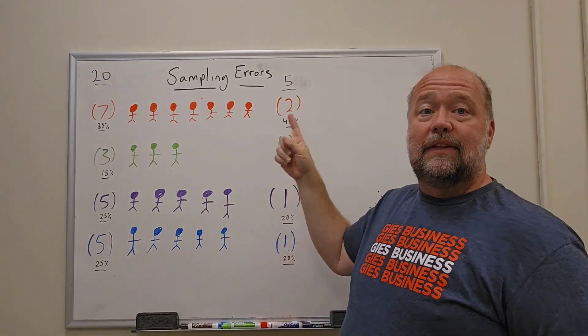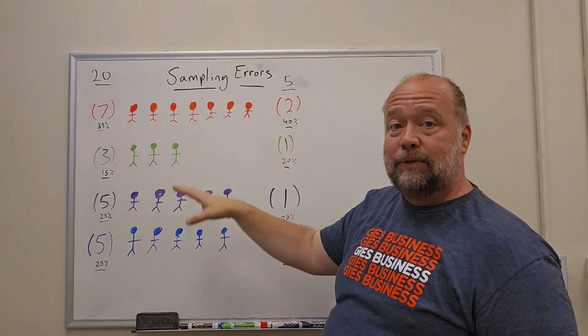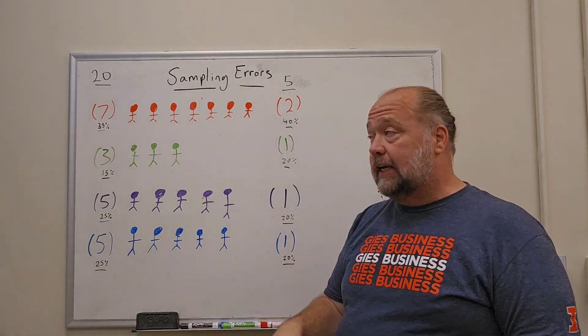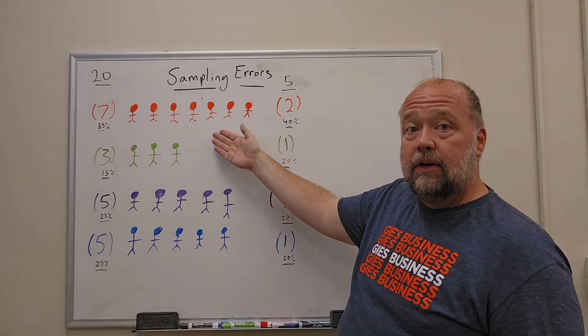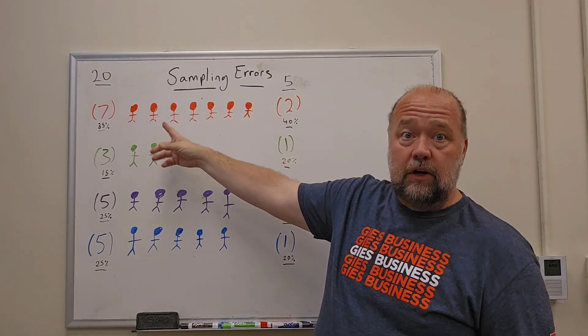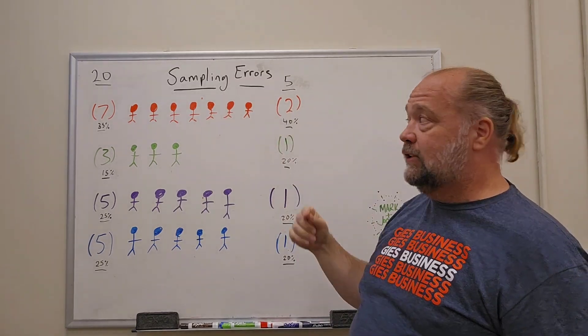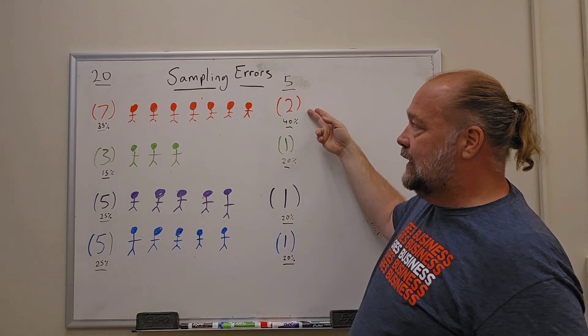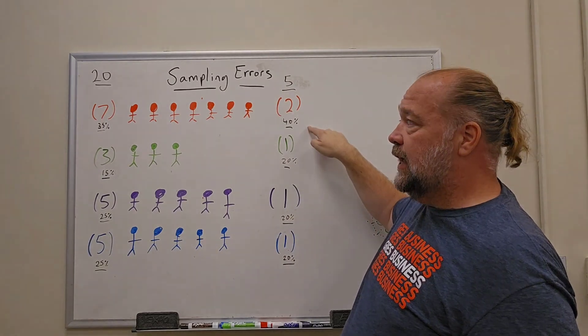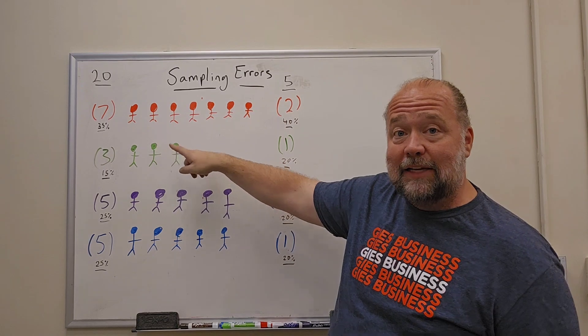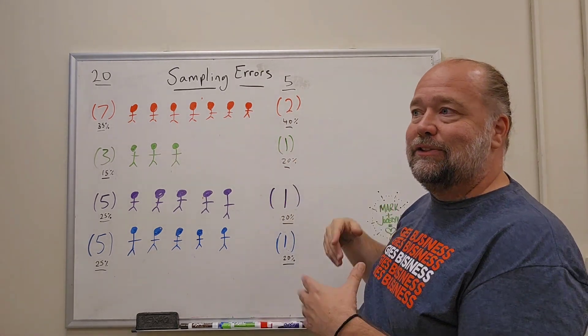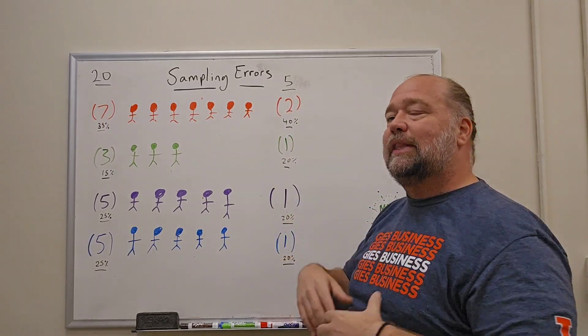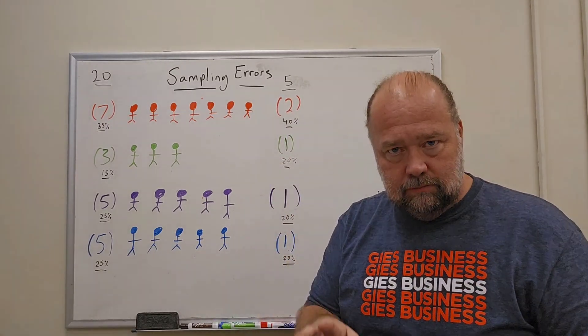And what happens when you have sampling errors is sometimes the samples you pick don't actually represent the population. So for example, here we have examples of oversampling and undersampling. So here, in the reds, there's oversampling. Because here, seven out of the 20 of the population, or 35%, are red. Now, I'm only going to survey five people here, so I say, well, red's the biggest one, so I'll let them have two. Well, two in the sample of five is actually 40%. So though they're 35% of the whole population, in the survey, in the sample, they count as 40%. So they're oversampled.